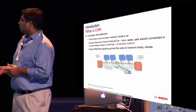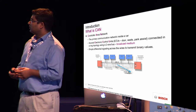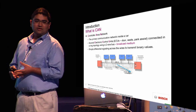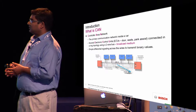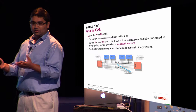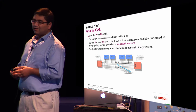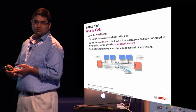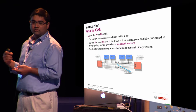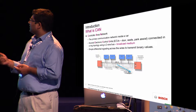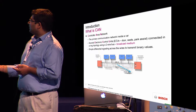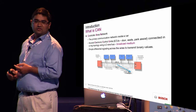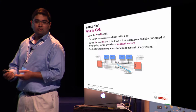The automotive bus is sort of new to this community, so just to give you an overview: the Control Area Network inside the car is basically one of the primary communication networks inside the car. You have several Electronic Control Units, ECUs, connected to it in a ring topology. You essentially have a broadcast medium connected via a two-wire bus.